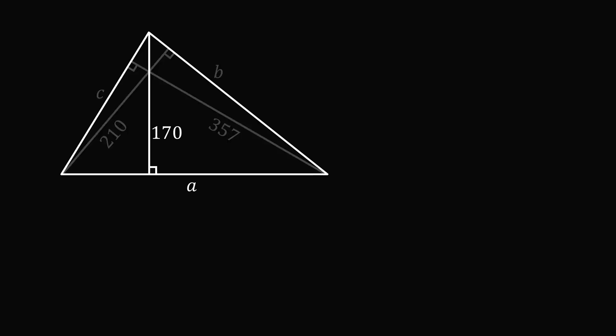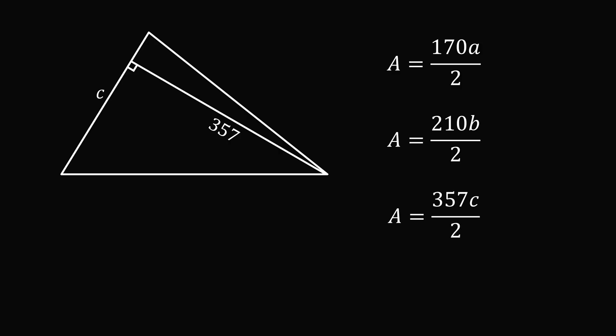We can calculate the area of the triangle in three different ways. One is the area is equal to 170 times the side length A all over 2. It's also equal to 210B all over 2. And the area is also equal to 357C all over 2.